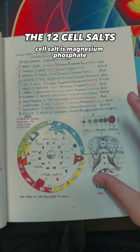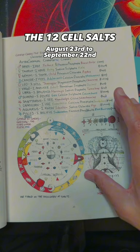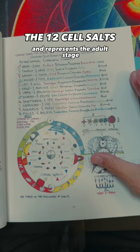August 23rd to September 22nd belongs to Virgo and is the stomach and represents the adult stage and the cell salt correspondent is potassium sulfate, which can be found in onions.